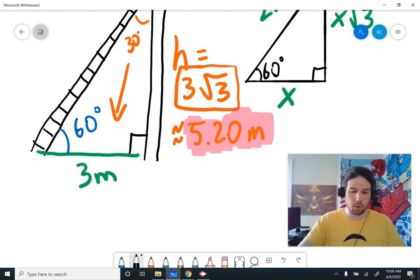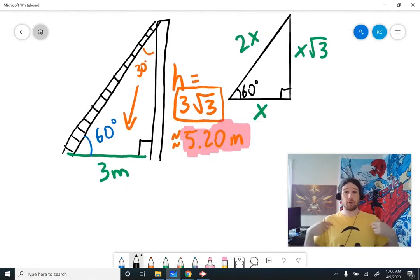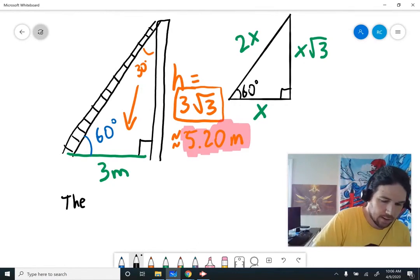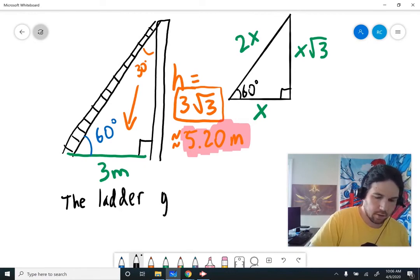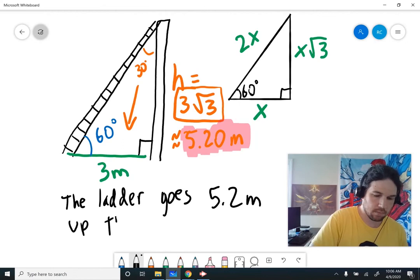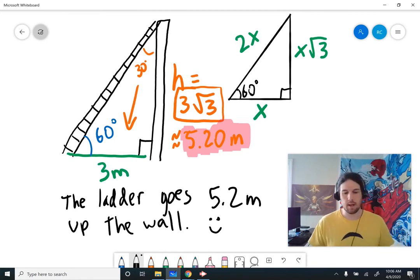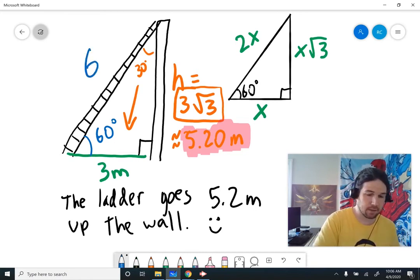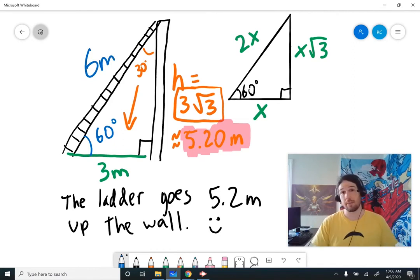So our answer, remember, this is a word problem. If someone asks you a problem or a question in words, you're going to answer in words, not in mathematical symbols. So you would say the ladder goes 5.2 meters up the wall. Smiley face. Purely by accident, by the way, we also figure out that the ladder is 6 meters long, because the hypotenuse is always twice the short leg. So if the short leg is 3 meters, the hypotenuse is 6 meters.